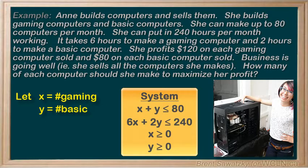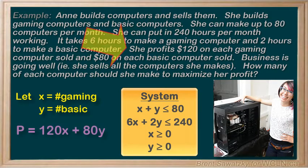Back to our question, we see we have a little more information — this is our profit information. Anne makes $120 for each gaming computer sold and $80 for each basic. So we can make a profit equation: P equals 120x plus 80y. This isn't an inequality and it has that extra variable P for profit, so we won't be graphing this one. We'll save it for our final analysis.